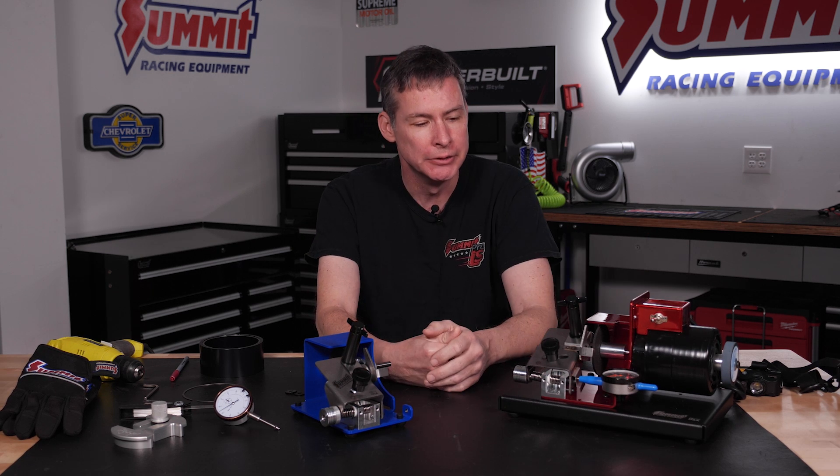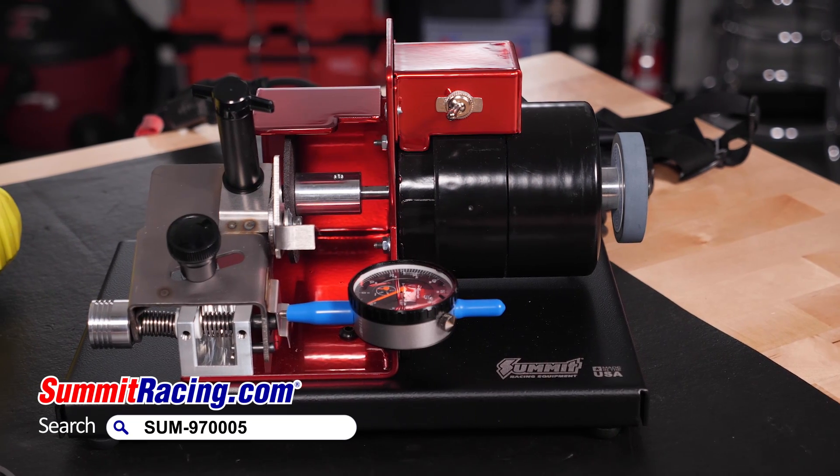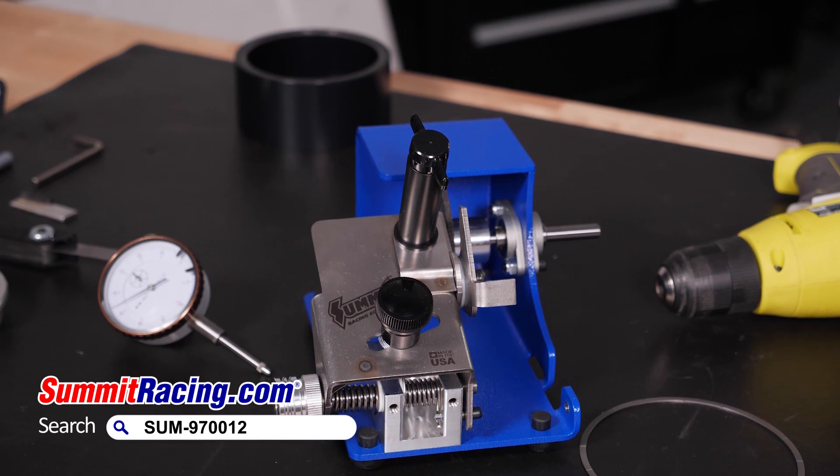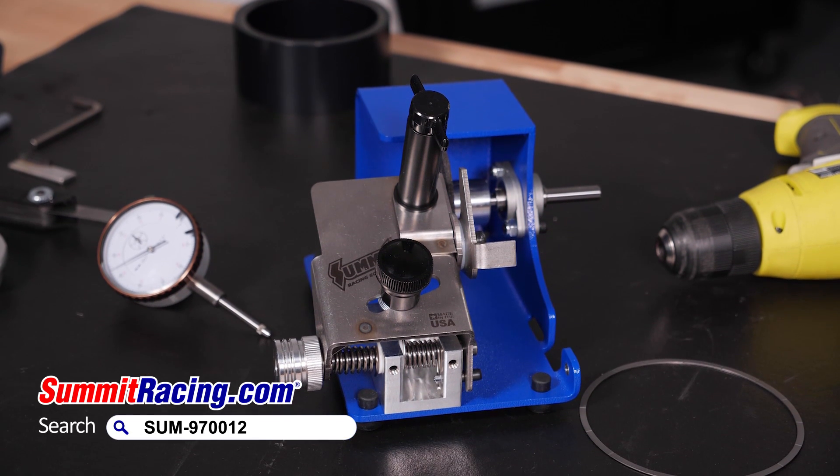We have the Pro Ring Filer, which is motorized. The table action is superb. I've used a lot of ring filers and it just makes quick work of everything. Now we wanted to have that same action on a less expensive model, so the first thing we did to save you money is we removed the motor and the indicator.